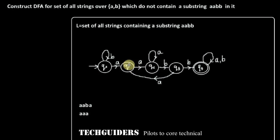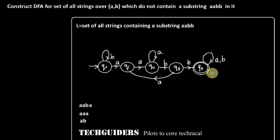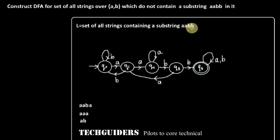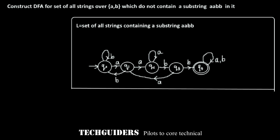What happens if we see a B from state Q1? After seeing one A we reached Q1, but that A is followed by a B. Now we need another substring AABB to reach the final state. So we move back to state Q0, which expects the substring AABB, or which remembers that no part of AABB has been seen yet. Now the DFA for the language L is complete.